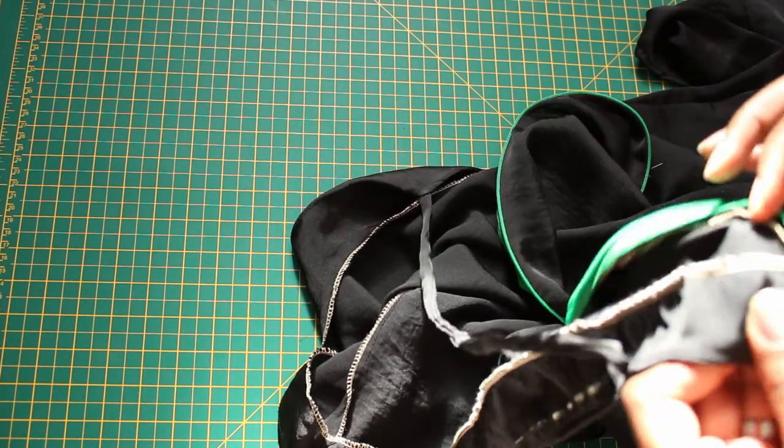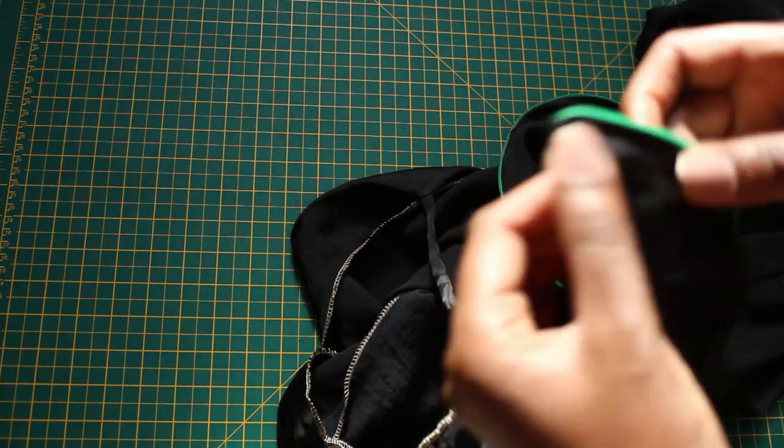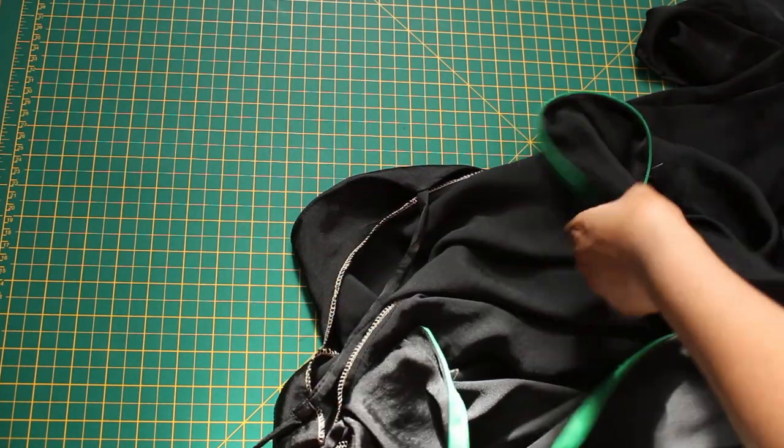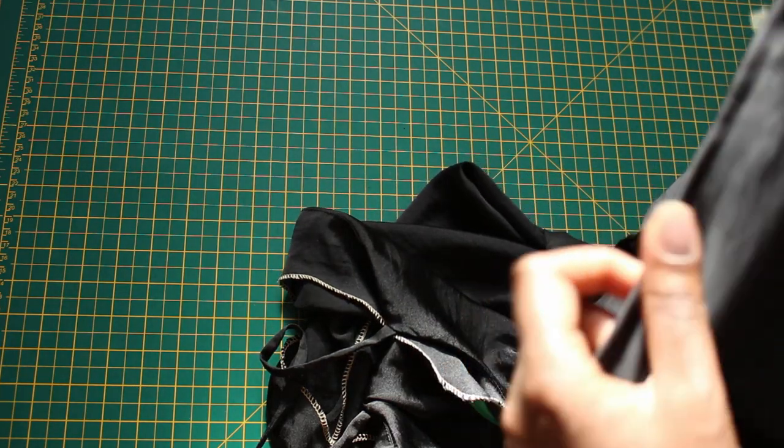At the end I just made a small stitching here on the zip and the facing just to keep it in place. And I hemmed the bottom of the dress.